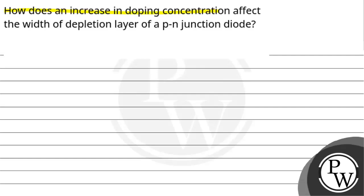Hello, let us read this question. How does an increase in doping concentration affect the width of depletion layer of a PN junction diode?